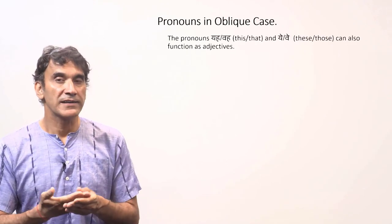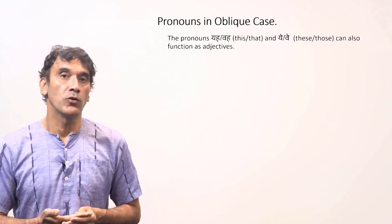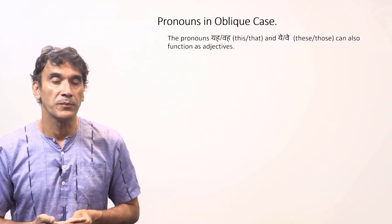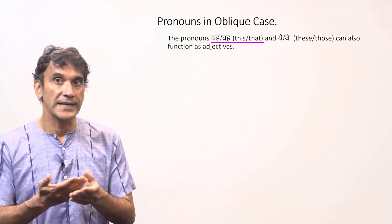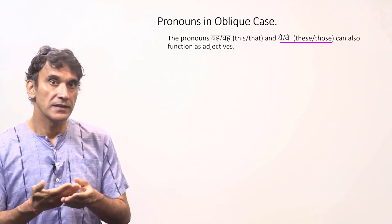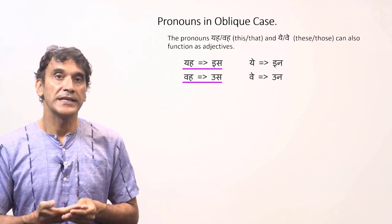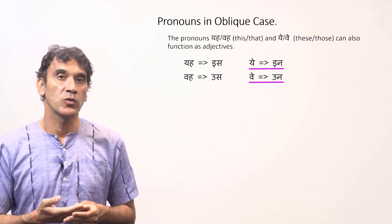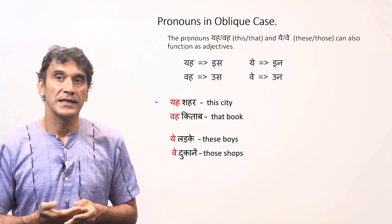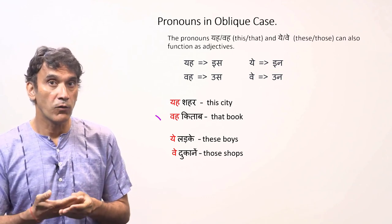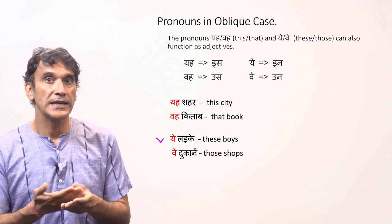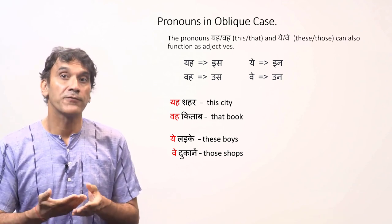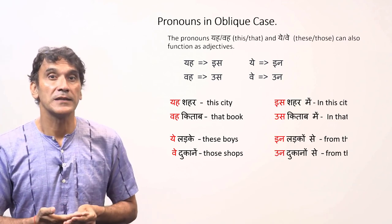As mentioned in earlier grammar points, the pronouns यह, वो, and वे can also take adjectival form. यह and वो mean 'this' and 'that'; यह and वे mean 'these' and 'those'. यह and वो become 'इस' and 'उस', while यह and वे become 'इन' and 'उन'. For example: 'यह शहर' (this city), 'वो किताब' (that book), 'यह लड़के' (these boys), 'वे दुकानें' (those shops).